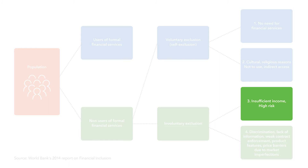Among low-income excluded individuals are those who only demand small services — that is, small loans, savings, etc. — that do not warrant the fixed costs implicit in financial intermediation. Why is financial inclusion important?